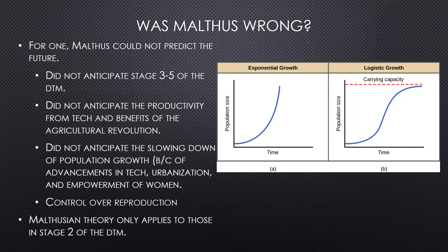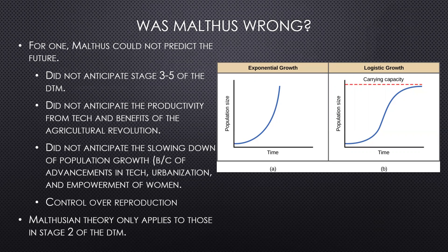He also didn't anticipate the slowing down of population growth, due to advancements in technology and medicine, urbanization, and the empowerment of women. He assumed humans had no control over their reproductive behavior and didn't predict birth control. Malthusian theory really only applies to those in stage two of the demographic transition model, where most population growth is occurring.